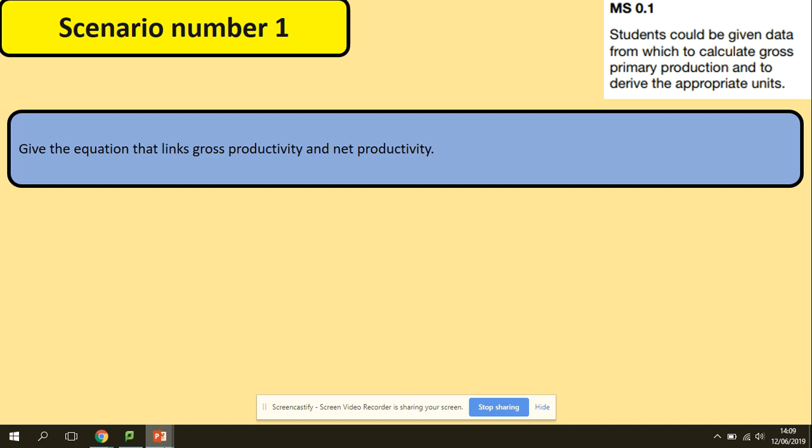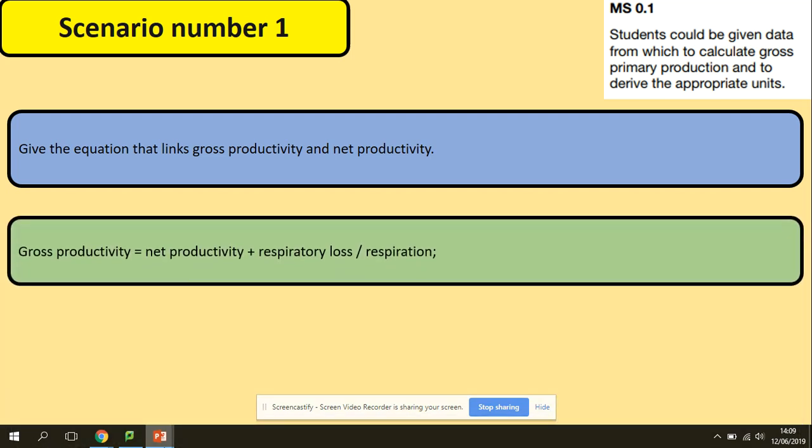There are typical questions. It could be the easy question to give the equation that links gross productivity and net productivity. What we've just said a second ago, we could obviously rearrange this equation in many different ways. We could do gross productivity equals net productivity plus respiration loss.